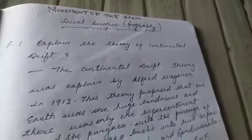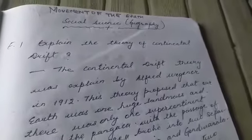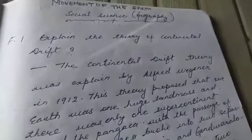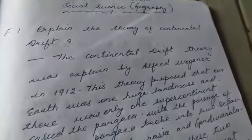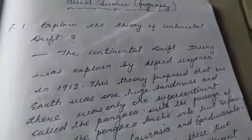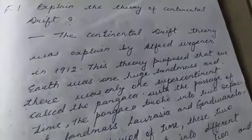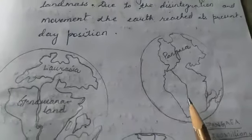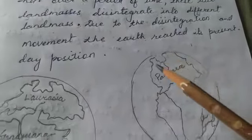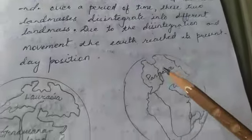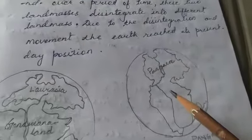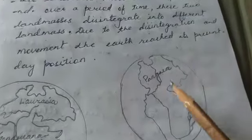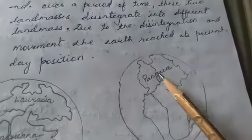In this theory, Wagener explained that our earth was one huge united landmass, and that united landmass is called a supercontinent — Pangea. Here we have a map of Pangea according to Wagener. He explained that our landmass was united about millions of years ago, and that united landmass equals Pangea.